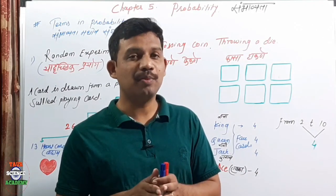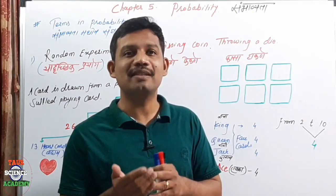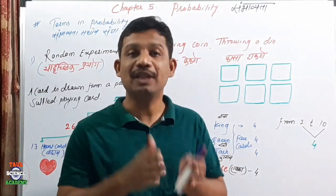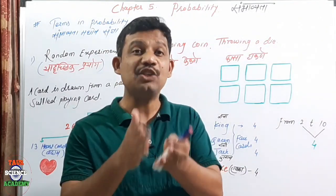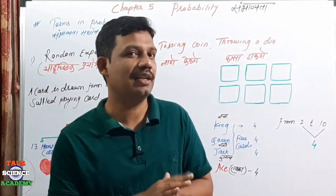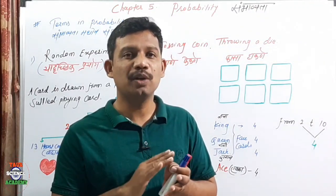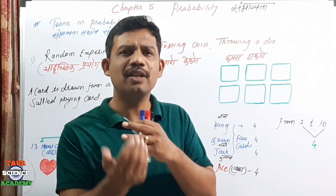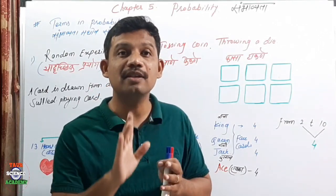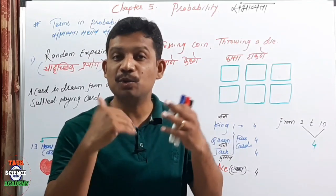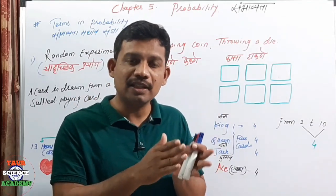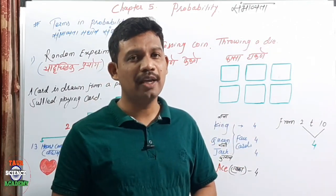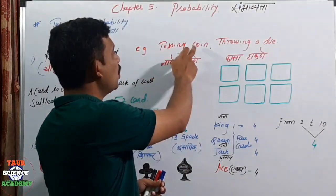The definition from your textbook: 'The experiment in which all possible results are known in advance, but none of them can be predicted with certainty, and for each result there is an equal possibility' — is known as a Random Experiment. Examples include tossing a coin or throwing a die.